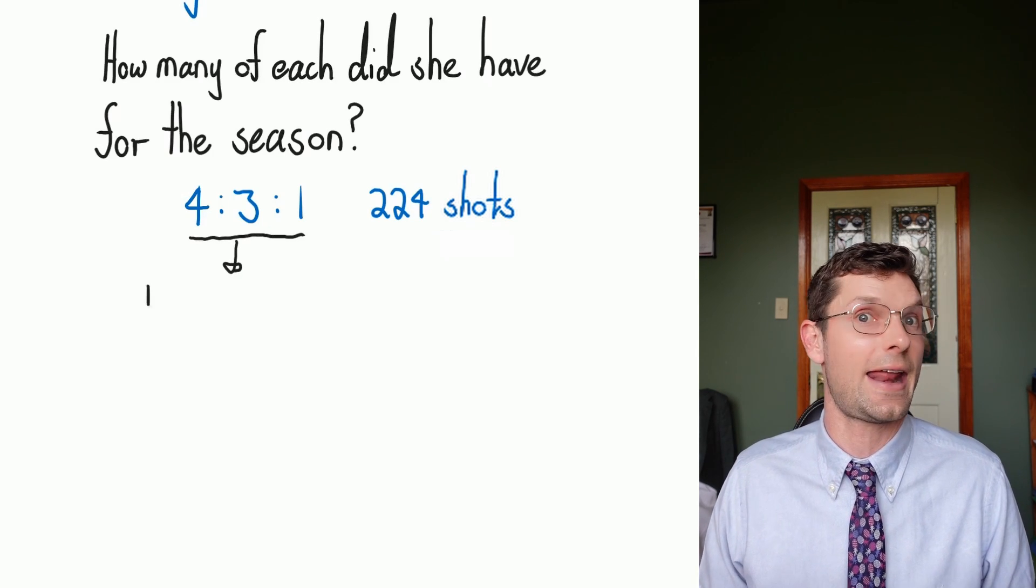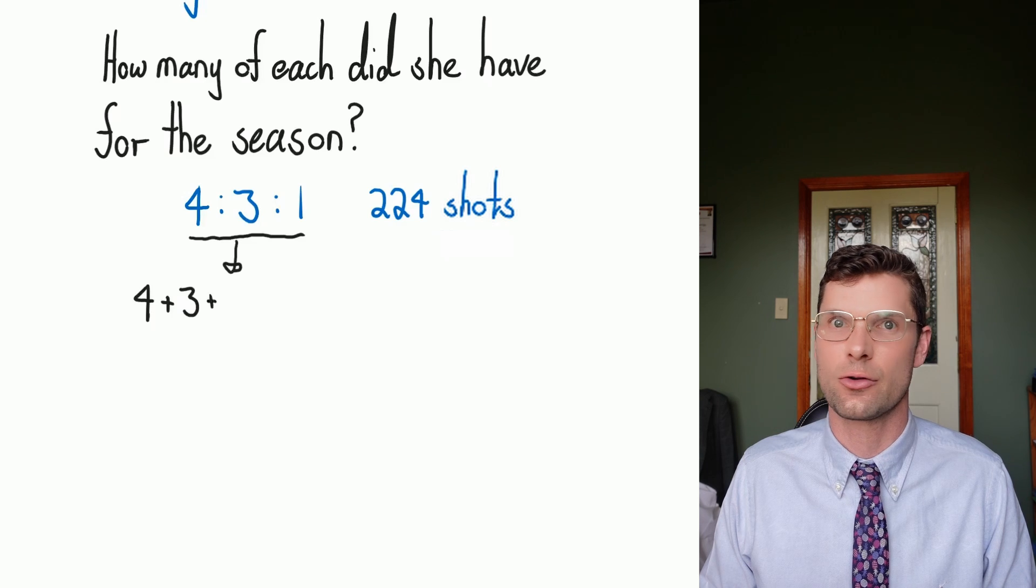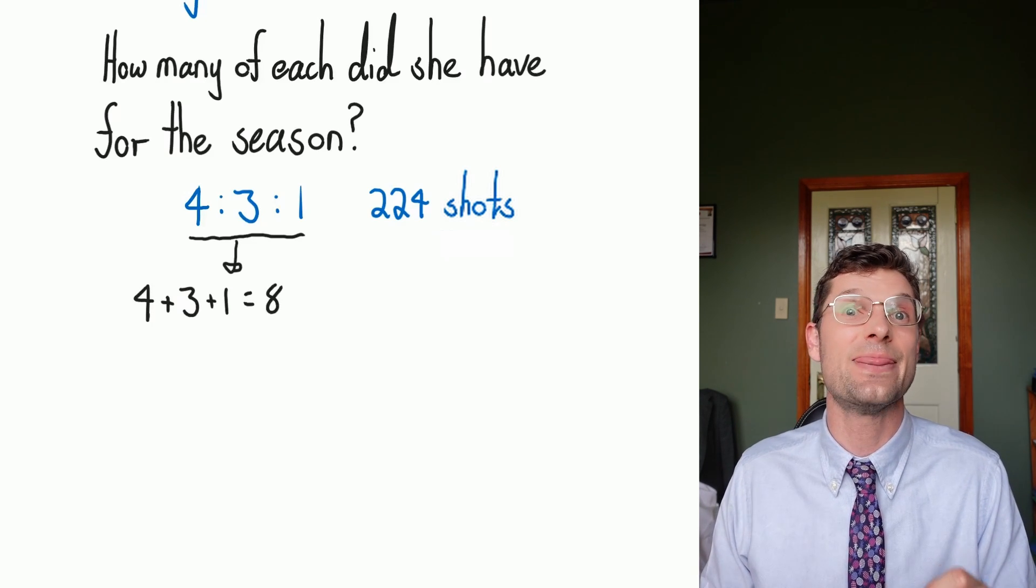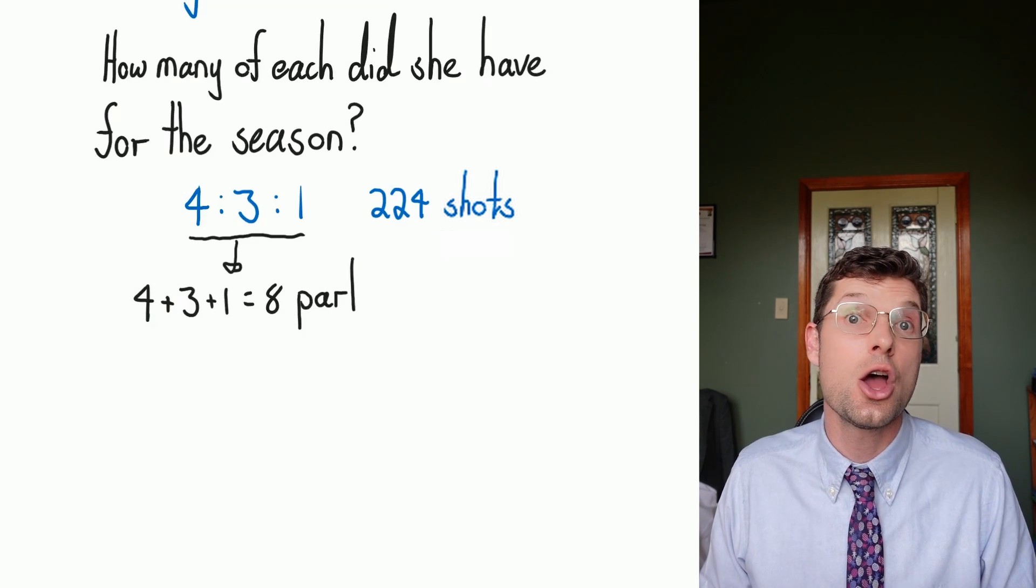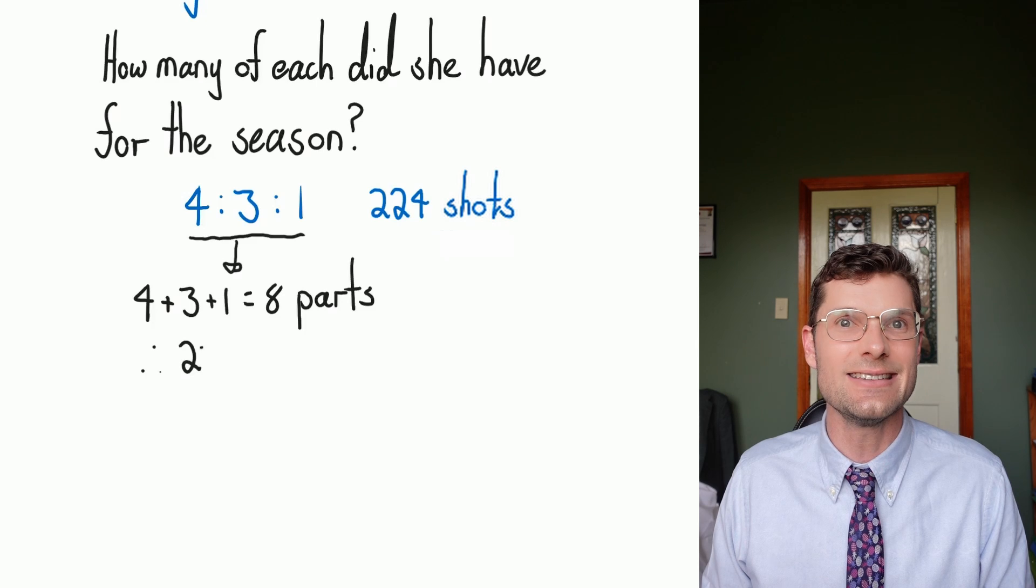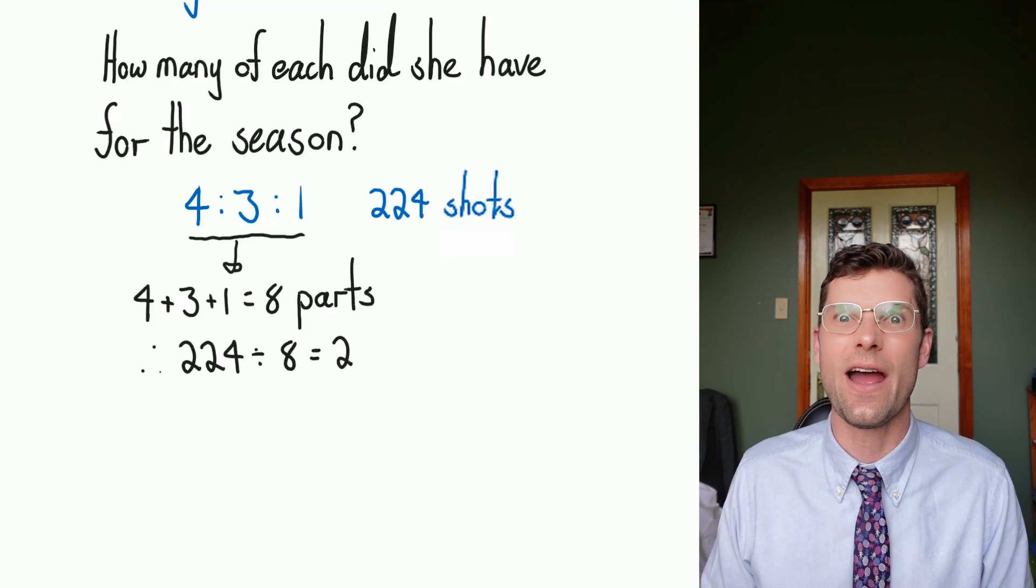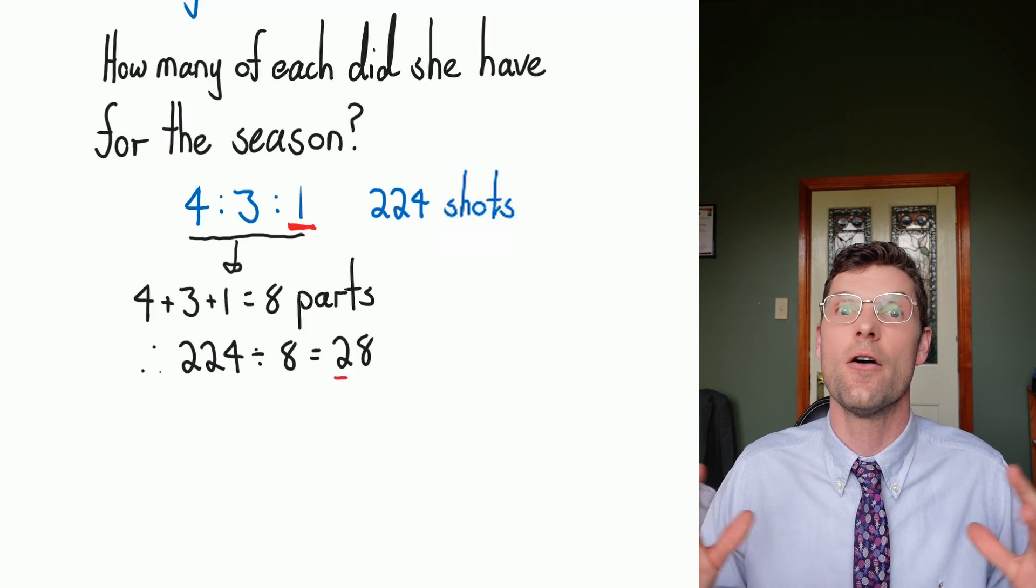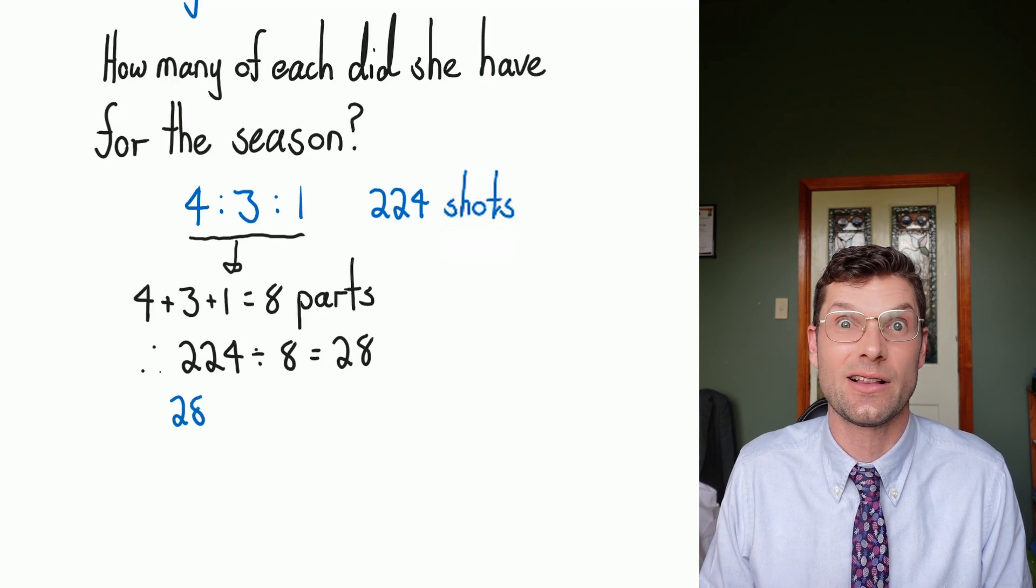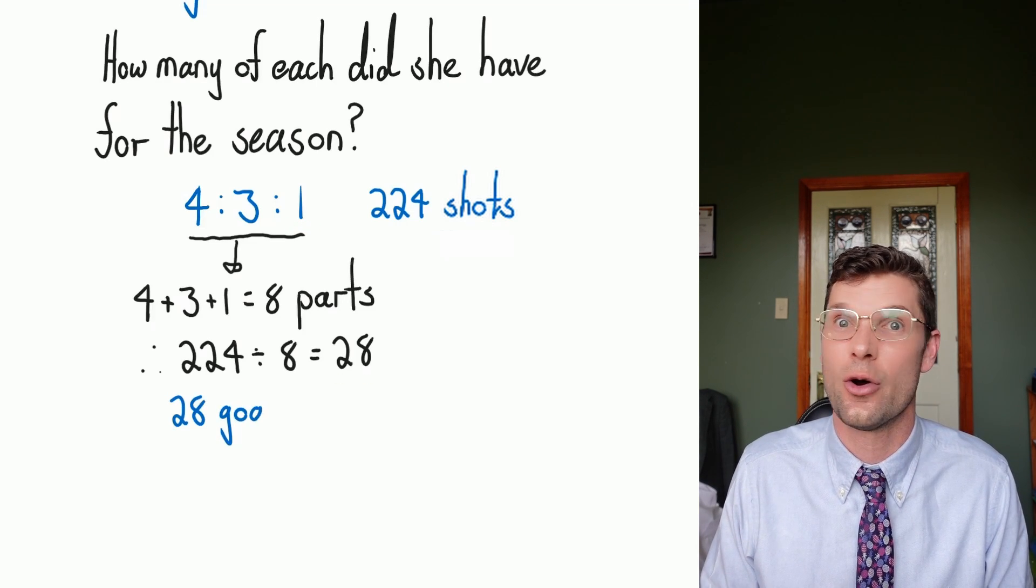So what I've gotta do first is find out how many parts I've got. 4 plus 3 plus 1 equals 8, and that's gonna be my divider. 224 divided by 8 equals 28. That's one part. And we know from the question straight away that the goals is only one part of the whole thing. So we can work out pretty quickly, hey, 28 goals were scored, that's it.